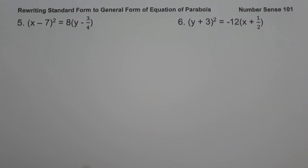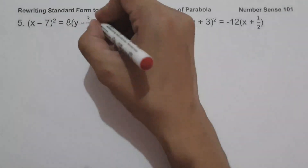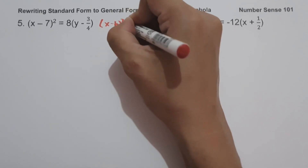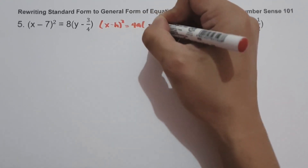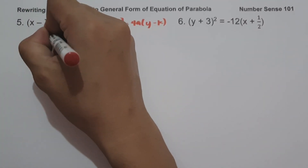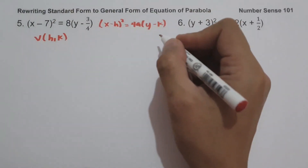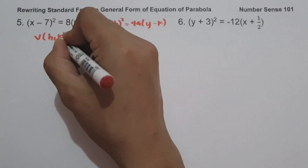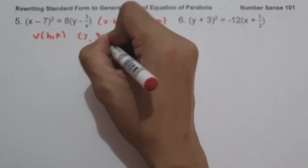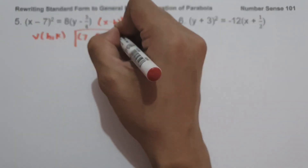On example number 5, we have (x − 7)² = 8 times quantity (y − 3/4). Since the equation is written in the form (x − h)² = 4a(y − k), to find the vertex, that is h and k: the value of h is positive 7, and k is 3/4. So this will be our vertex.